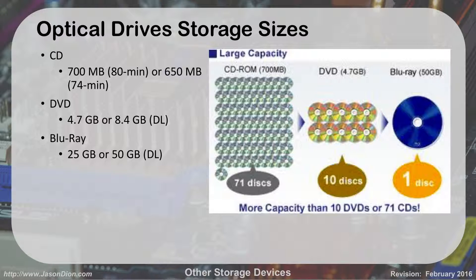A CD can hold up to 80 minutes of audio or 700 megabytes of data. A DVD has single layer and dual layer — they can hold 4.7 gigabytes or 8.4 gigabytes respectively. Blu-ray can store 25 gigabytes, or up to 50 gigabytes if it's dual layer. That's why Xbox One games come on dual-layer Blu-ray discs — it takes about 50 gigabytes. To put it in perspective, one Blu-ray disc can hold the equivalent of 10 DVDs or 71 CDs.